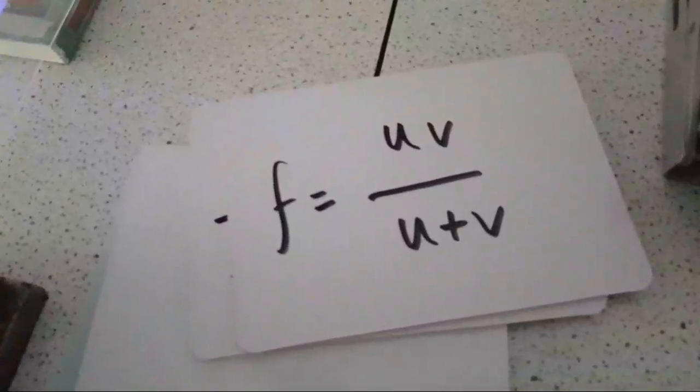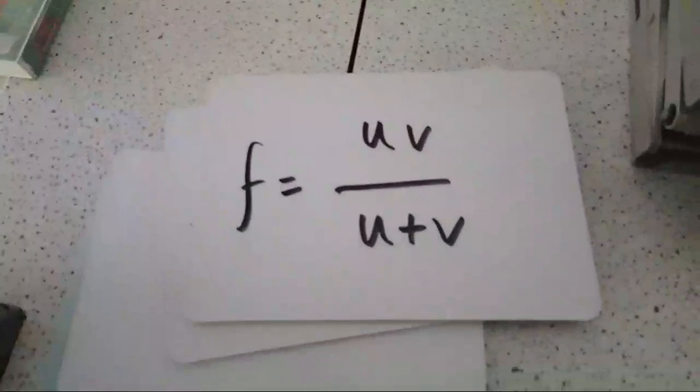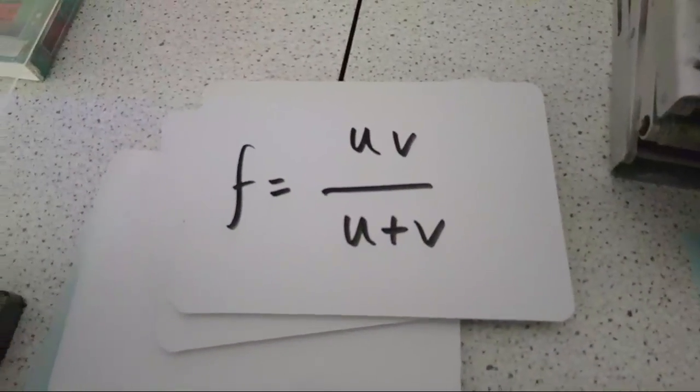The experiment we're going to conduct requires us first to rearrange that by doing cross multiplication, so we get f equals uv over u plus v. And from that therefore we'll get a graph which should yield a straight line with a gradient of the focal length.